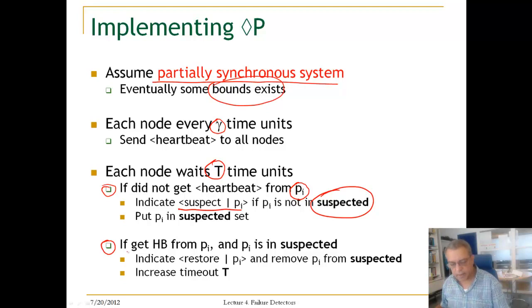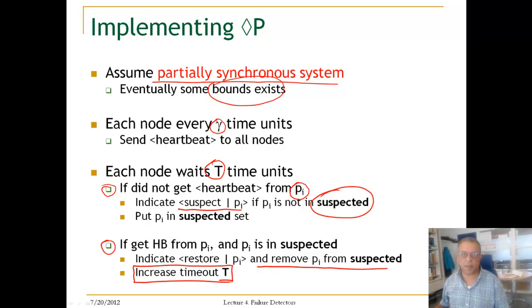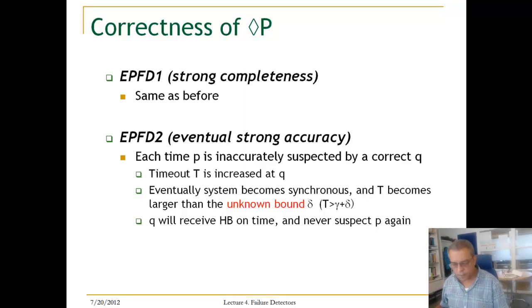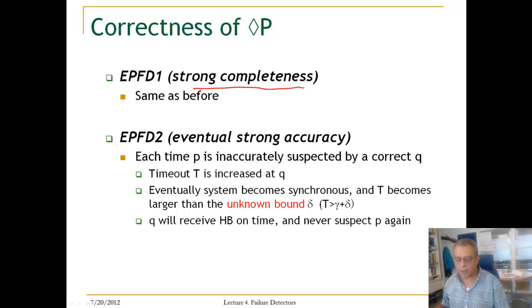On the other hand, if it gets a heartbeat again from P and P is in the suspected list, it will remove P from the suspected list, but it will also increase the timeout. This is the algorithm. The correctness: strong completeness is as before, because if a node does not get a heartbeat from a process, it will suspect the process, and if the process crashed, it will continue suspecting the process.